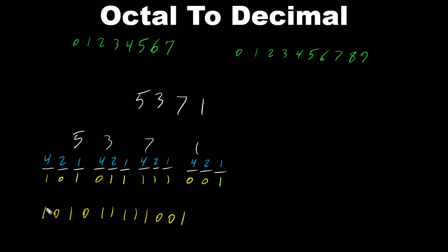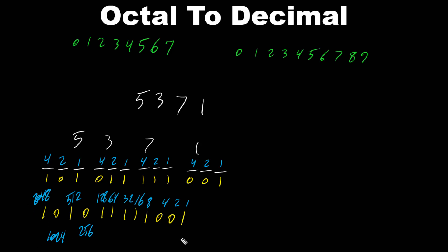Now we can put the decimal place values for these binary numbers: 1, 2, 4, 8, 16, 32, 64, 128, 256, 512, 1024, 2048. These come from 2 to the power of the bit position — bit position 0, 1, 2, 3, 4, and so on. Why base 2? Because of binary — we have 0s and 1s. Now we need to add the ones that are turned on: 2048, 512, 128, 64, 32, 16, 8, and 1 are on.